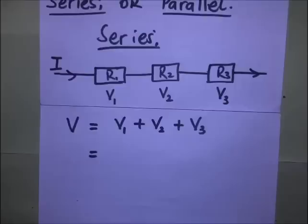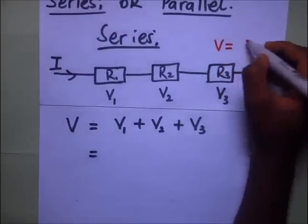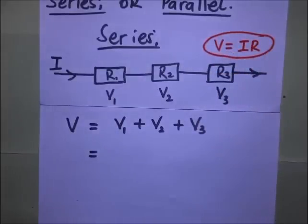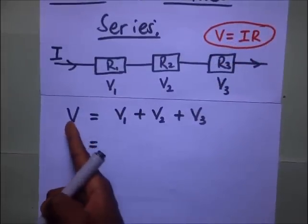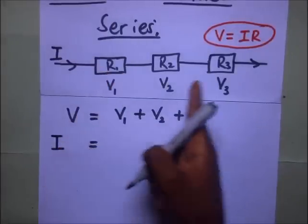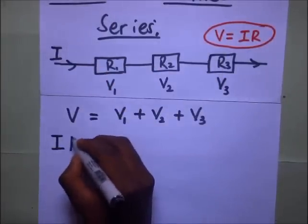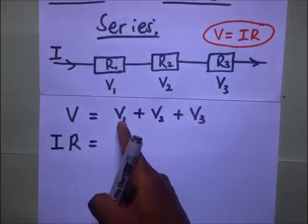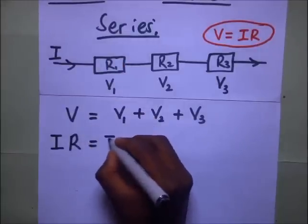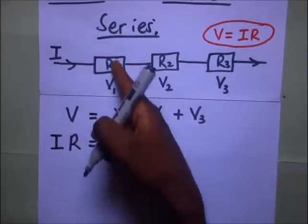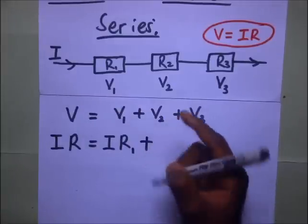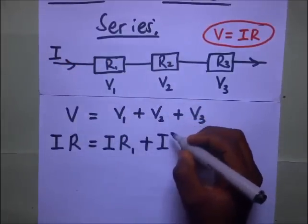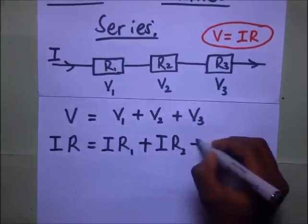So the total voltage V is equal to V1 plus V2 plus V3. Now, remembering from our previous video, voltage is equal to I times R — we got this from Ohm's law. So if V equals IR, it means the total current going through the whole circuit, capital I, times the effective resistance of all three resistors, capital R, is equal to the voltage across each resistor: I times R1 plus I times R2.